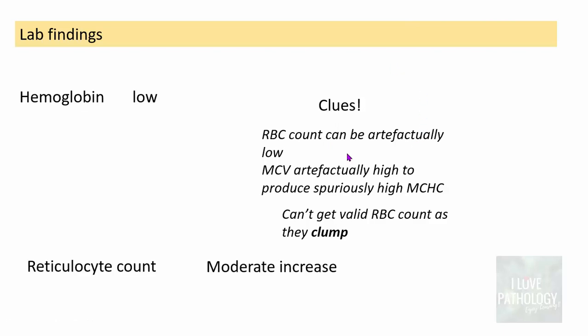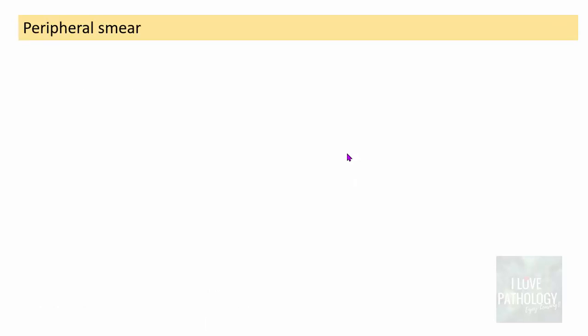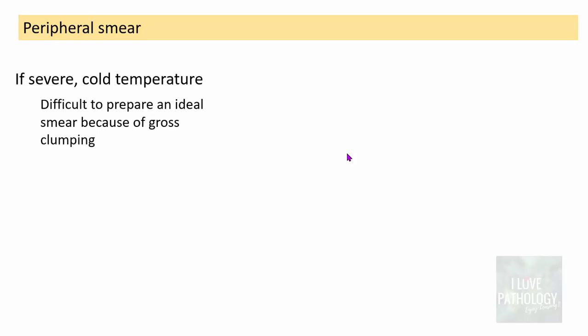There is a modest increase in reticulocyte count and mildly elevated bilirubin. The direct antiglobulin test is again positive. Peripheral smear findings are very typical.